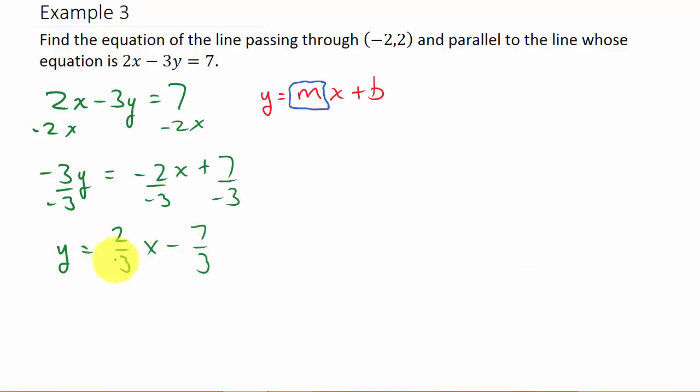Alright, so if you look, the number in front of x is my slope. So my slope m is equal to 2/3. So now I have everything I need. I have my slope and I have my point on my line.